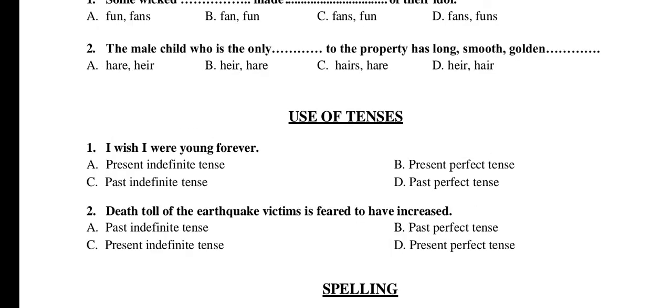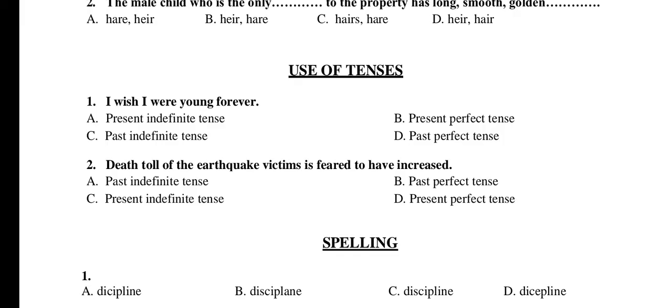Use of Tenses. Question 1: I wish I was young forever. A) present indefinite tense, B) present perfect tense, C) past indefinite tense, D) past perfect tense. The right option is A: present indefinite tense. Question 2: Death toll of the earthquake victims is feared to have increased. A) past indefinite tense, B) past perfect tense, C) present indefinite tense, D) present perfect tense. The right option is D: present perfect tense.